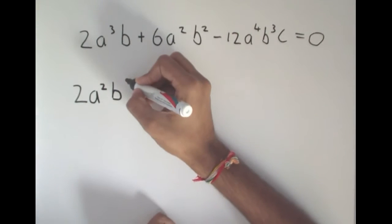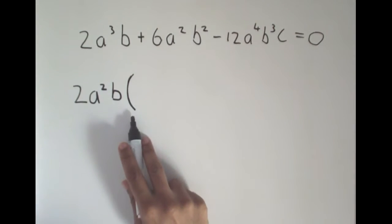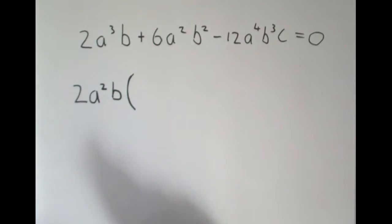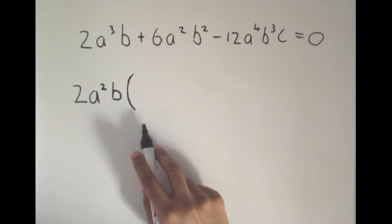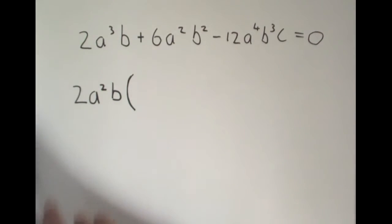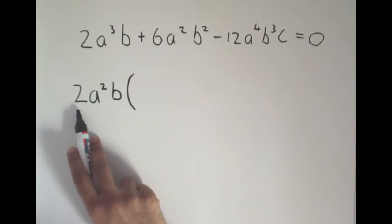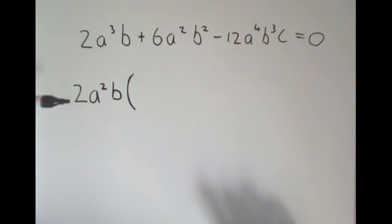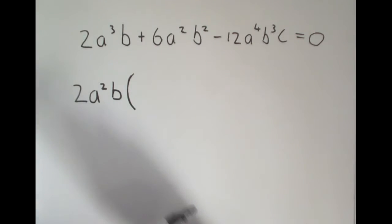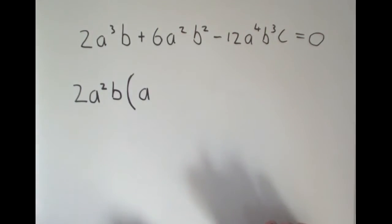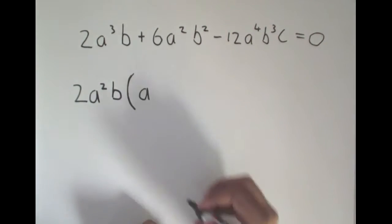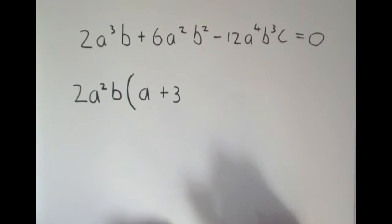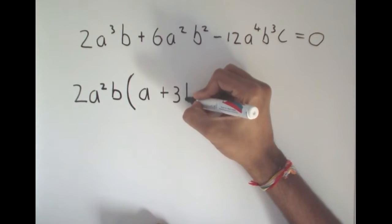Now I open up a big bracket — brackets mean multiplication — so I have taken this out and this says I am multiplying it back in. In the bracket I put what is left. From my first term, I took out the 2, the a², and the b, so I am left with an a. From the next term, I took out 2 from 6, leaving 3, the a² cancels, and b² minus b leaves b.